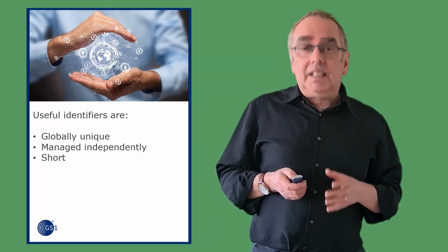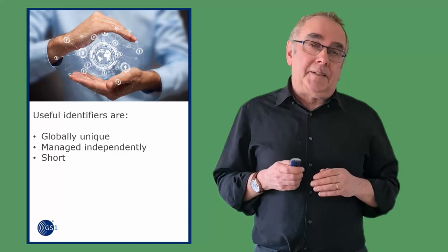They need to be globally unique, and the shorter the better. GS1 can offer a globally unique product identifier in as little as seven digits plus a check digit.